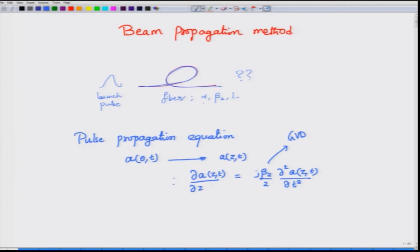The fiber parameters you need are: attenuation, beta2 (second order dispersion / GVD), and the length L. Sometimes you are not interested in the actual fiber length but in the dispersion length, defined as T0² divided by the magnitude of beta2. Significant changes in pulse shape occur only for fiber lengths that approach or exceed this dispersion length.